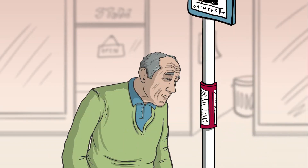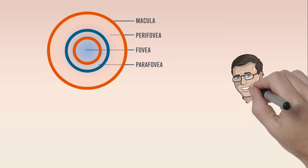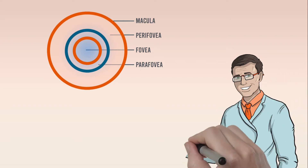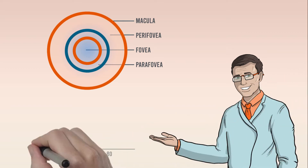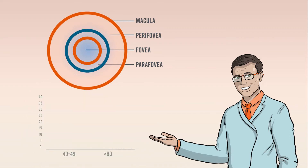An estimated 170 million people worldwide experience AMD. It is the leading cause of severe vision loss in people over 60. The incidence of AMD increases with age: 2.1 percent of people age 40 to 49 experience AMD, and that number increases to 35 percent of people 80 years or older.